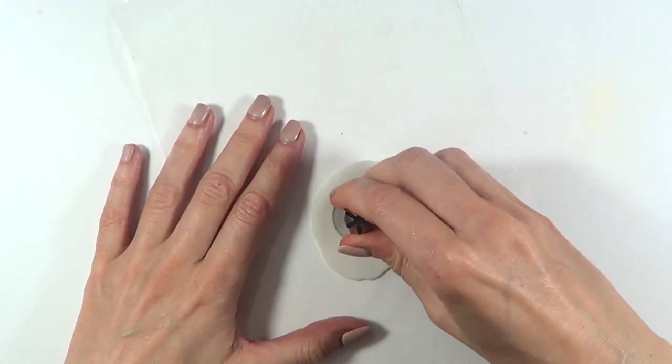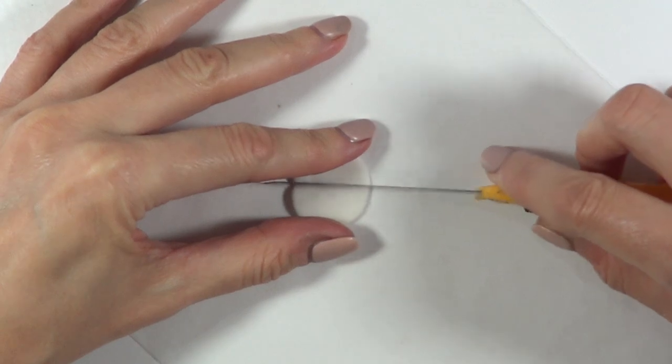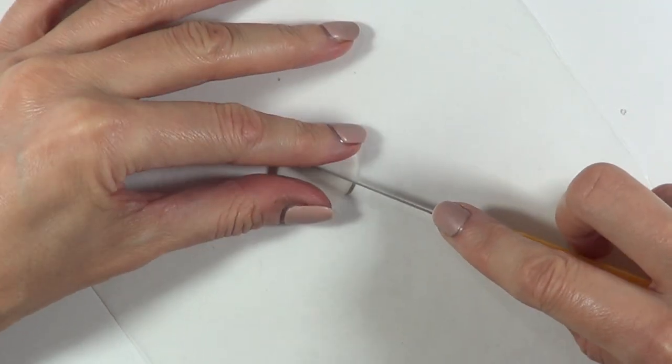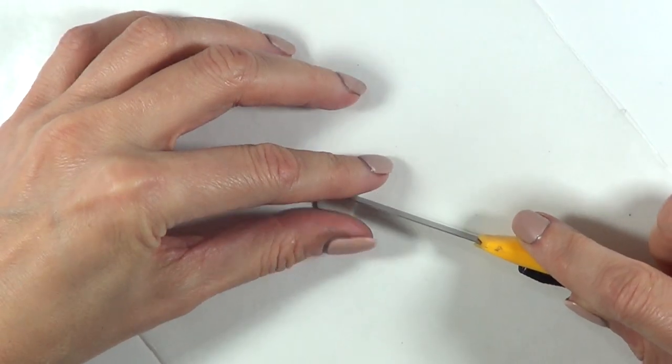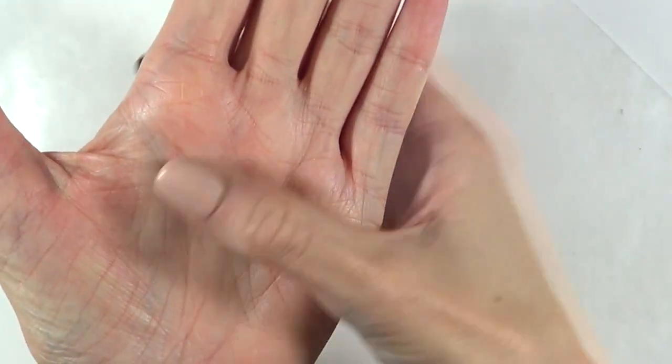I'm going to take my Wilton 1M piping tip and use this as a cookie cutter. I'm going to be cutting this in two parts as even as I can, and that half part again in half. Then I'm just going to be making two tiny balls out of that and let them dry.